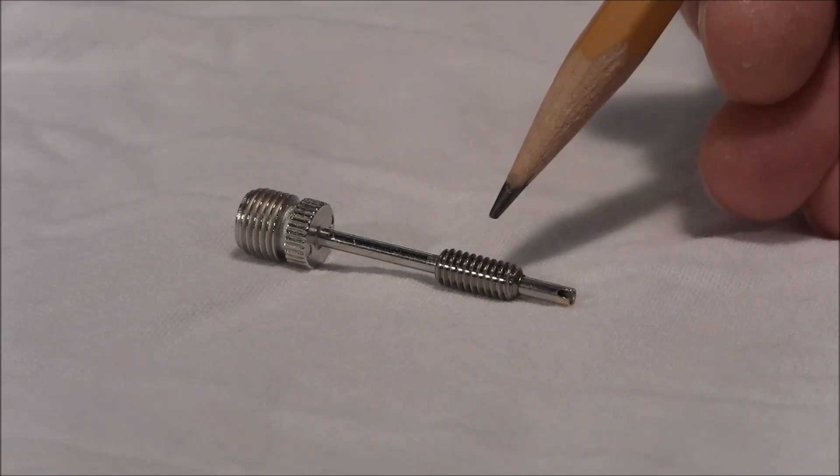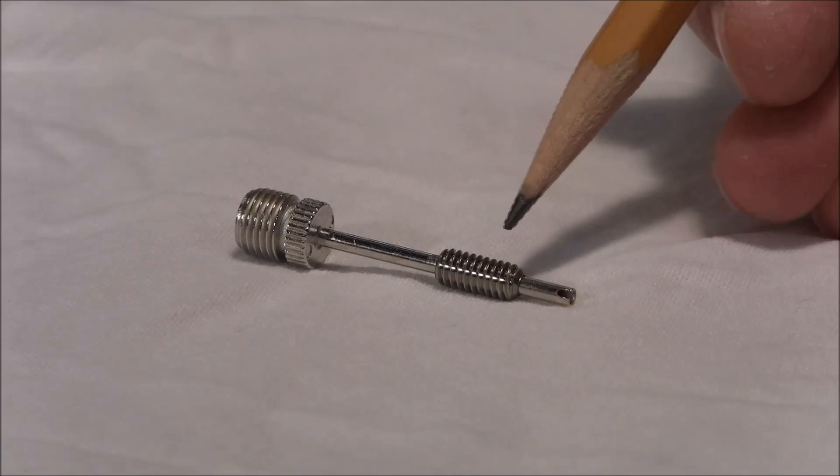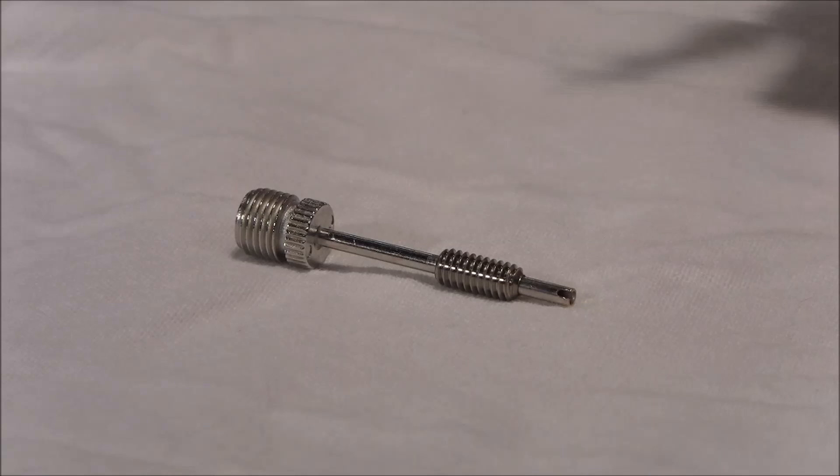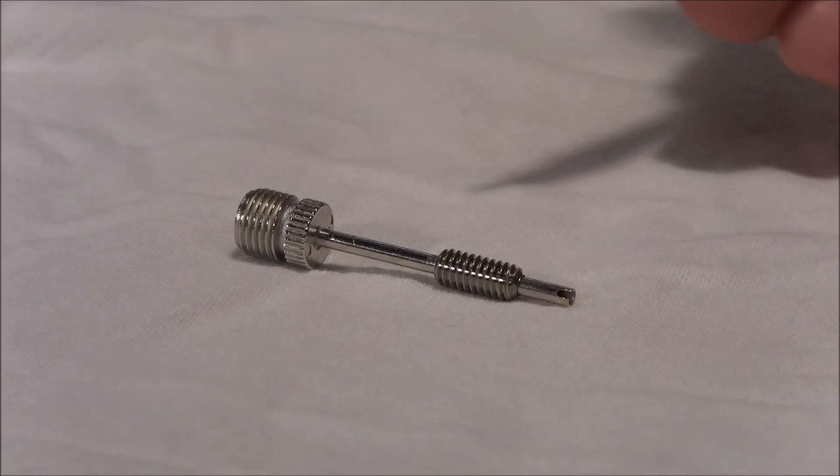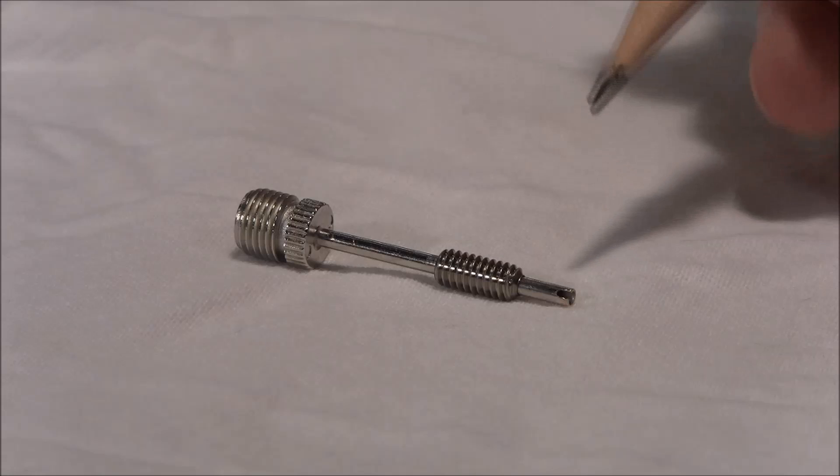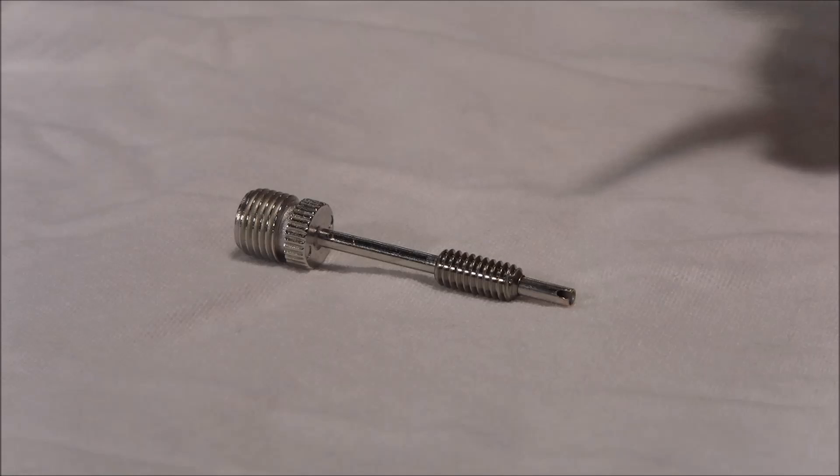The set screw is an 8 gauge 32 thread per inch set screw. This one is 3 eighths of an inch long. Some of the others I've built were half inch long. I wouldn't go any longer than a half inch just because it's too hard to drill through it. Anything smaller than 3 eighths of an inch can get hard to handle.